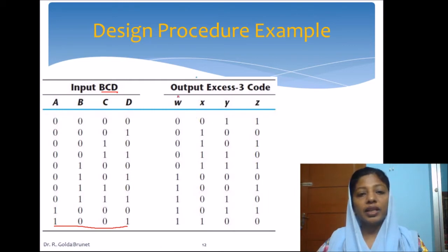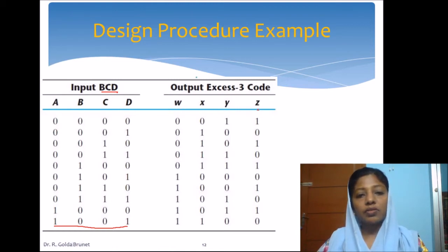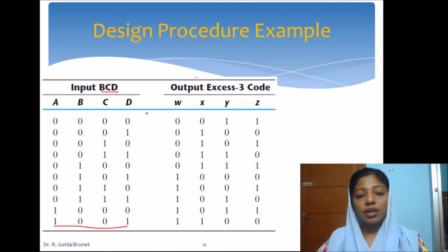Now we can write each of these as functions. W is a function, X is a function, Y is a function, Z is a function. We can obtain the Boolean expression for all these variables W, X, Y, and Z in terms of A, B, C, and D using the 4-variable Karnaugh map.